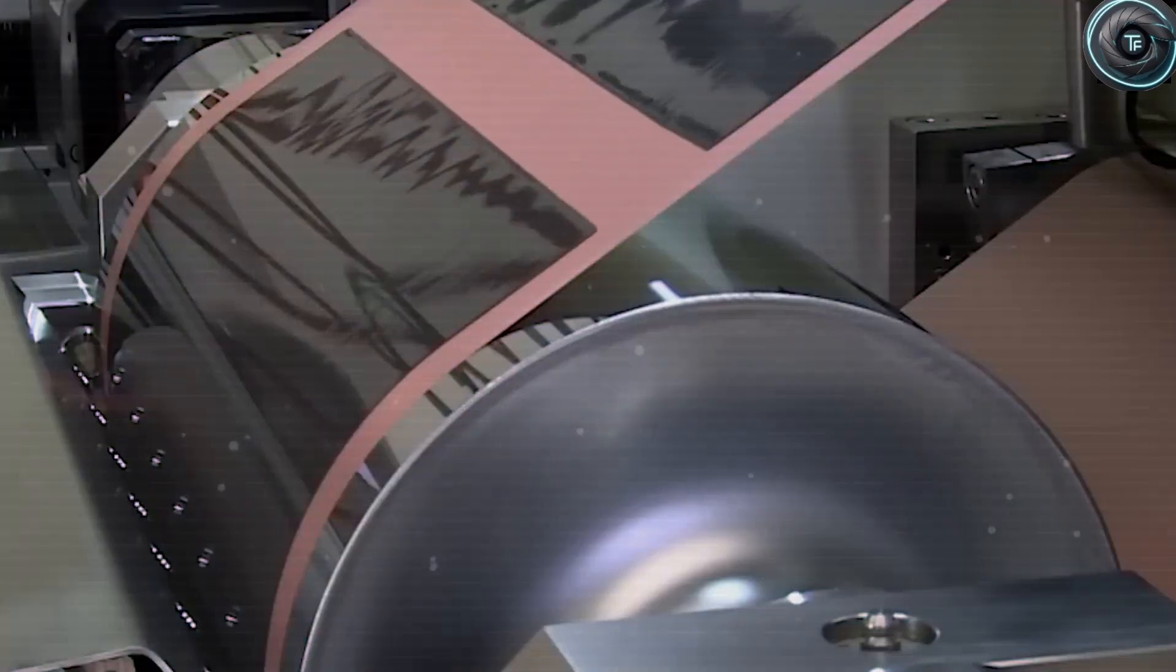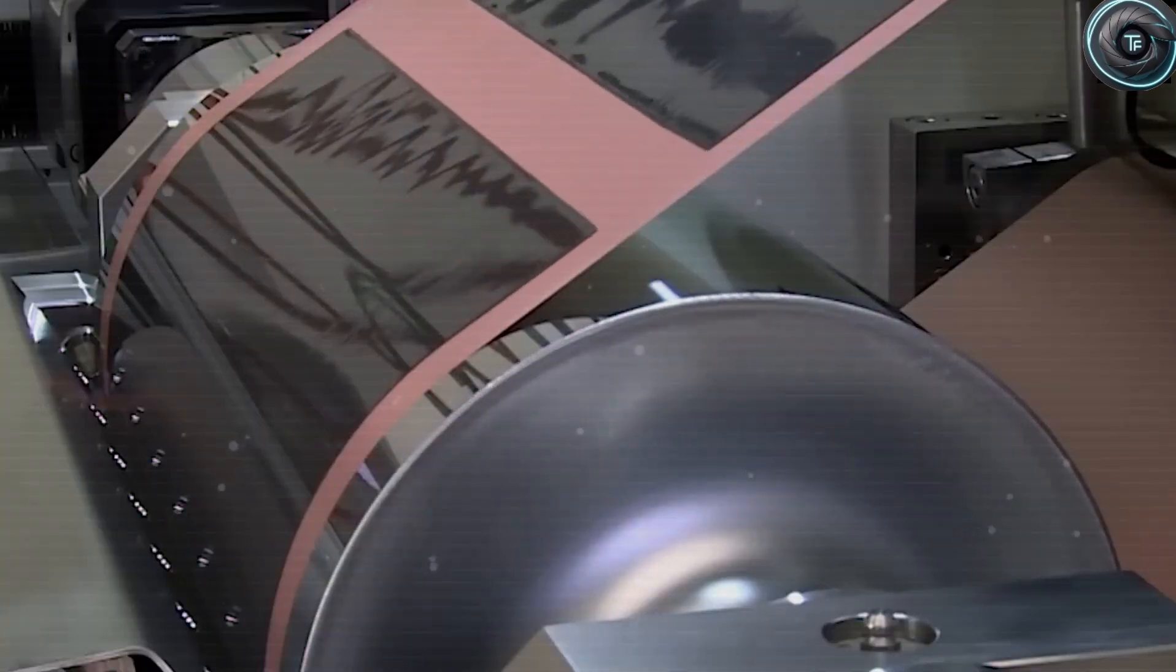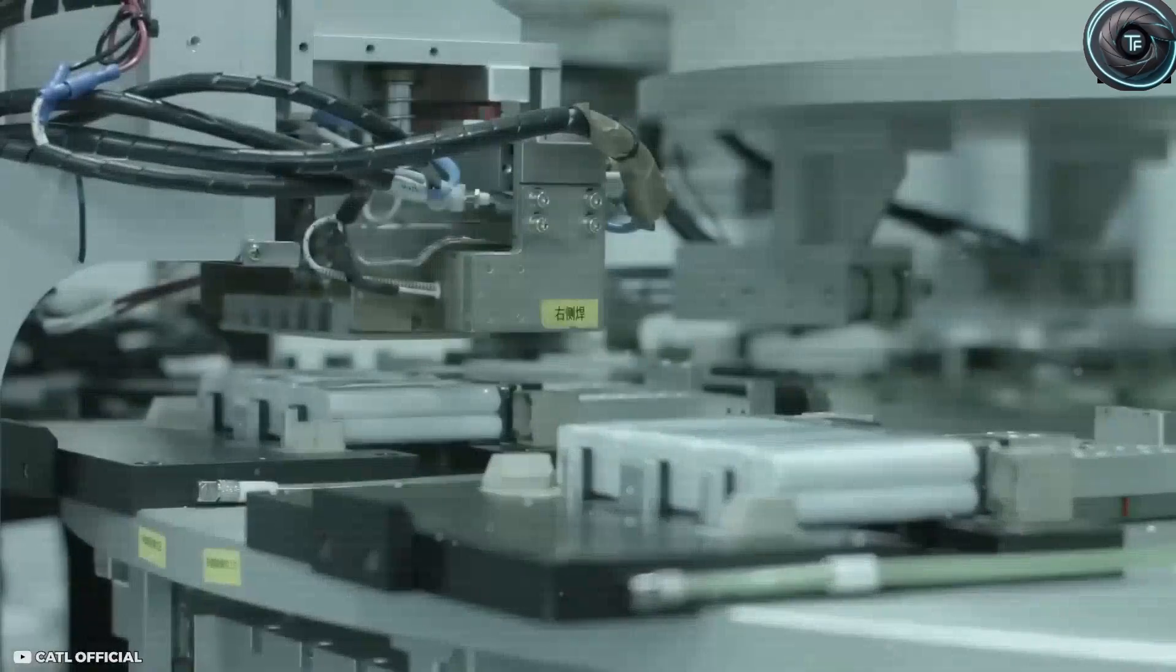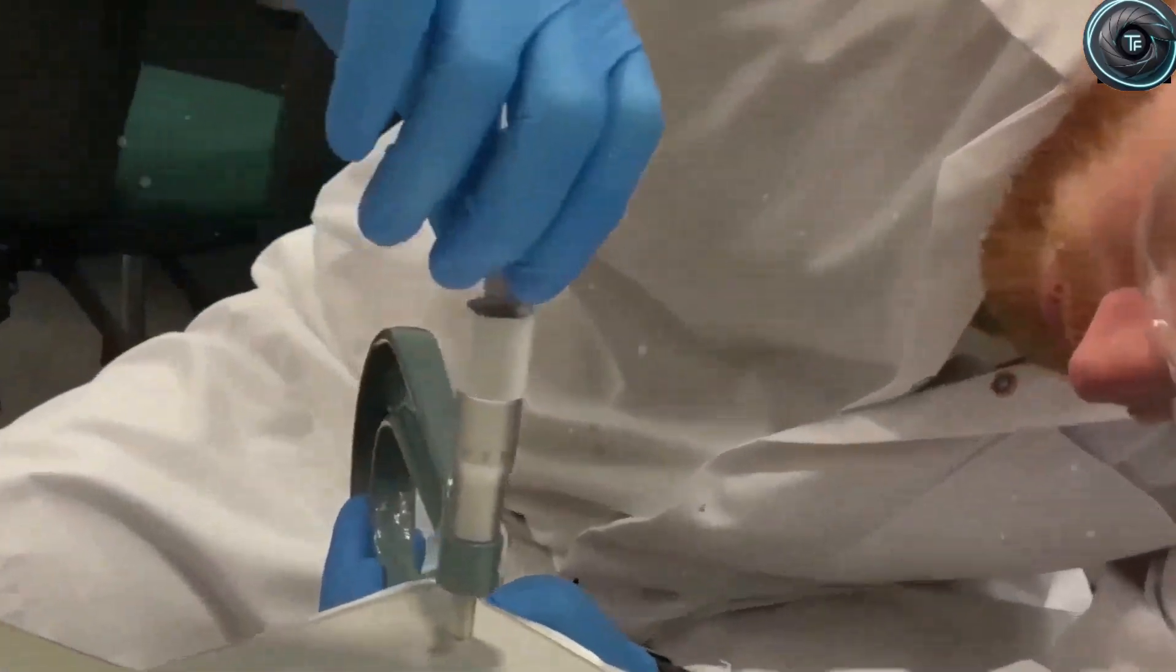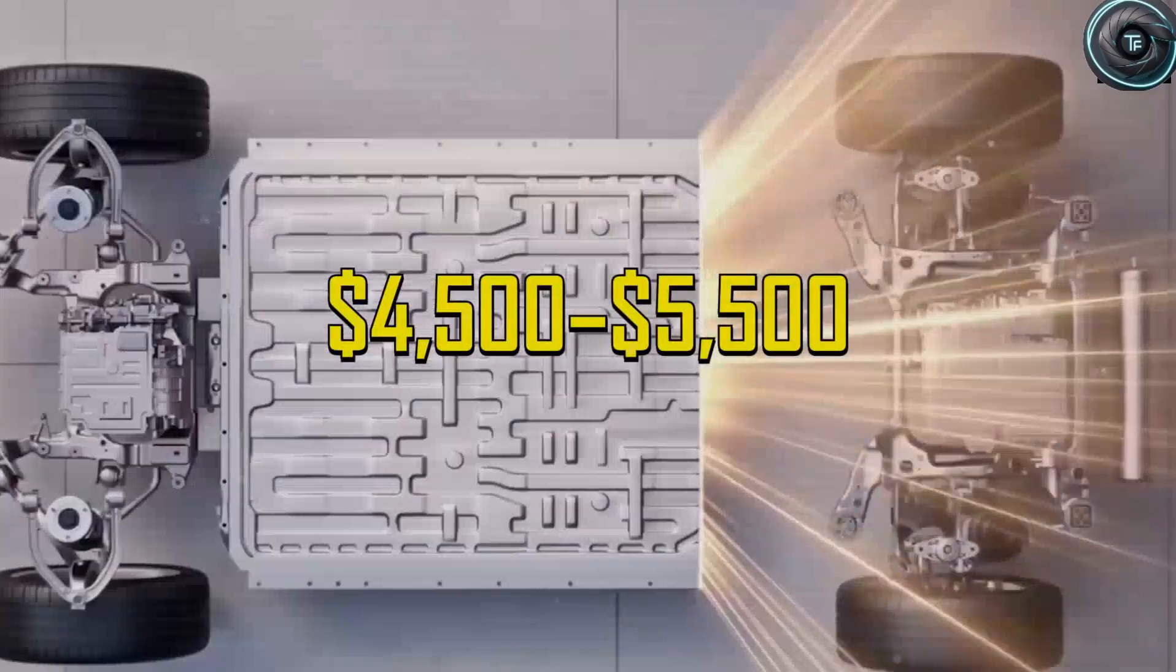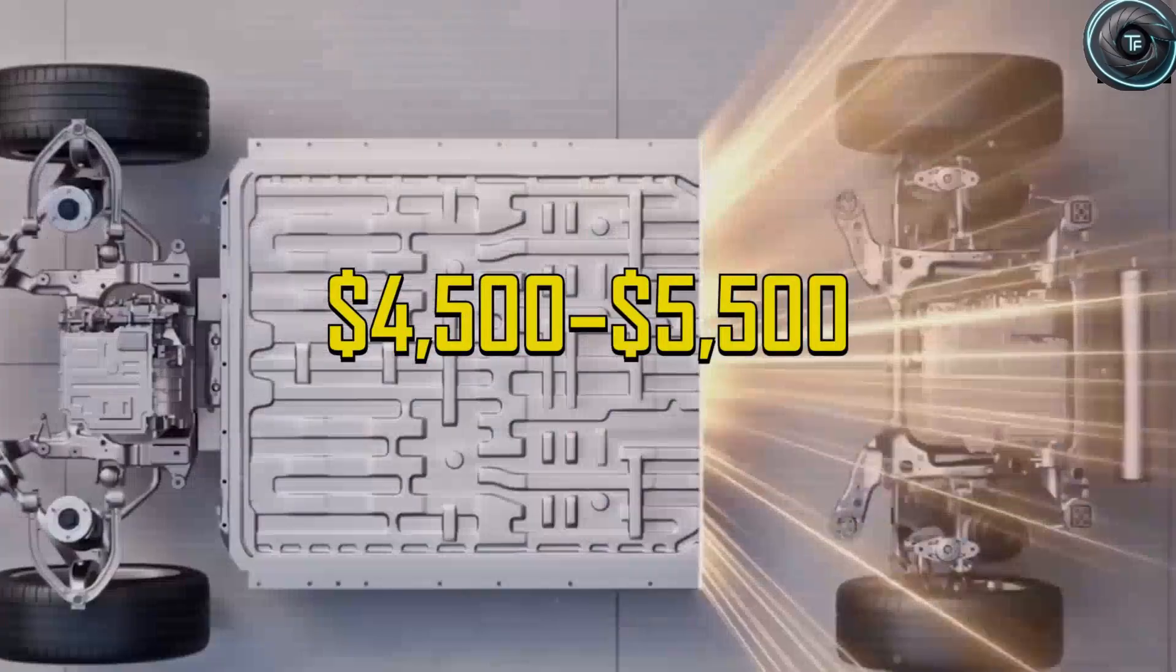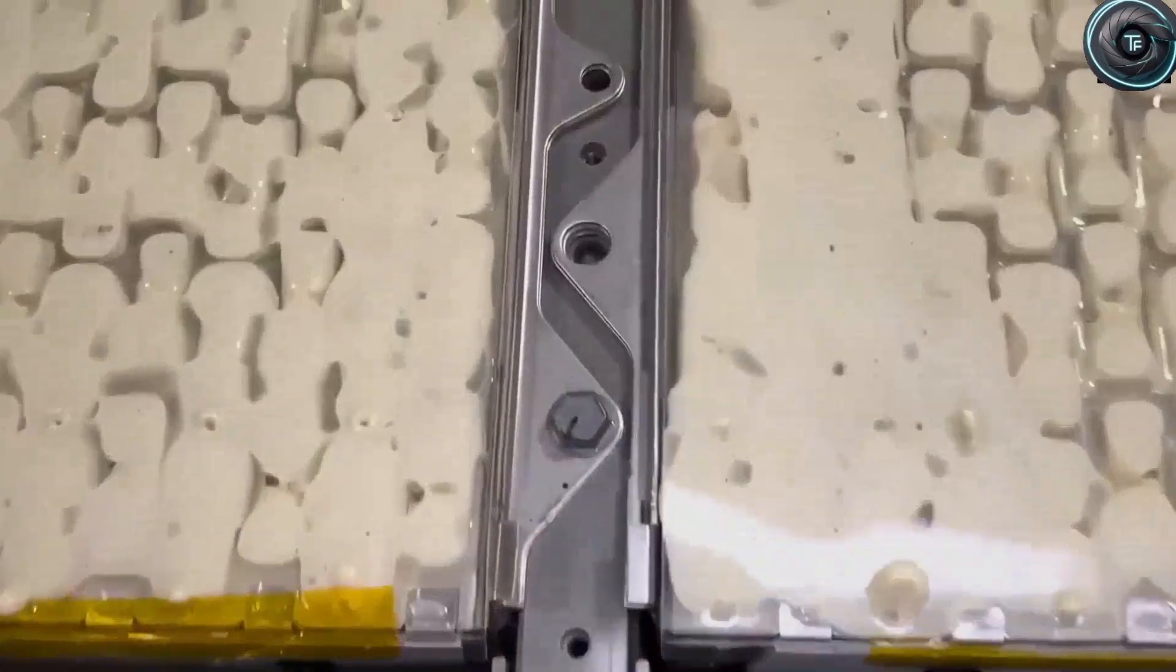Early modeling estimates place the 60 kWh pack at roughly $4,500 to $5,500 when production ramps up, with potential further reductions to as low as $4,000 to $4,500 within the next two to three years. This kind of pricing could enable Tesla to introduce the Model 2 at a competitive entry-level price that undercuts many current lithium-ion EVs, giving Tesla a massive advantage in both cost and adoption.